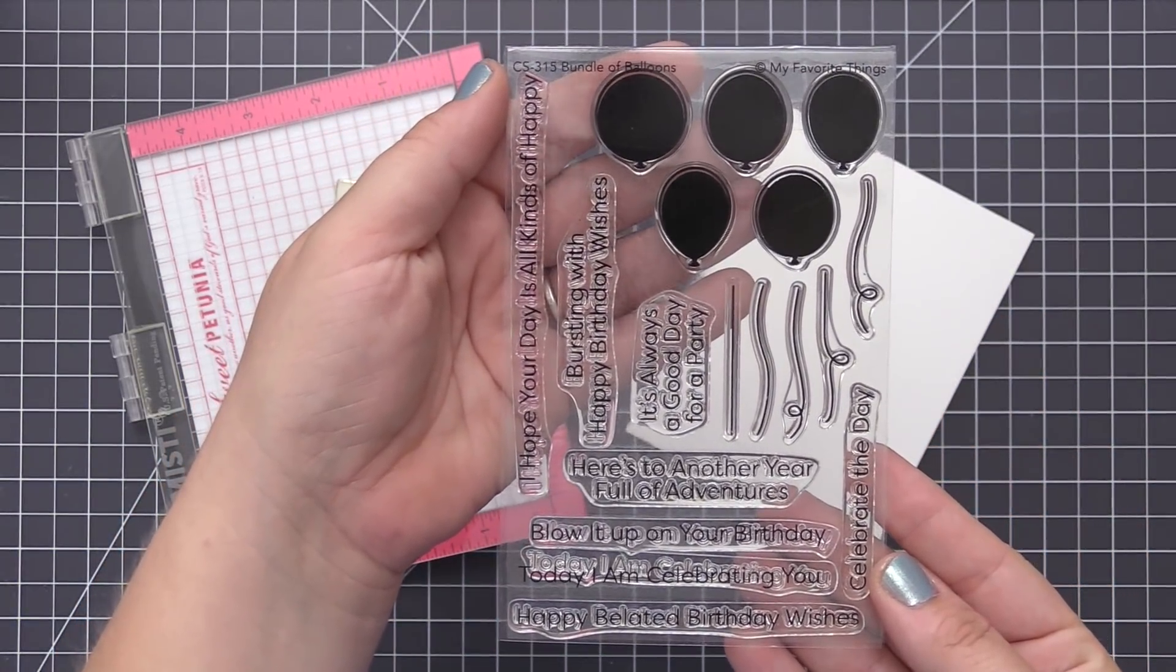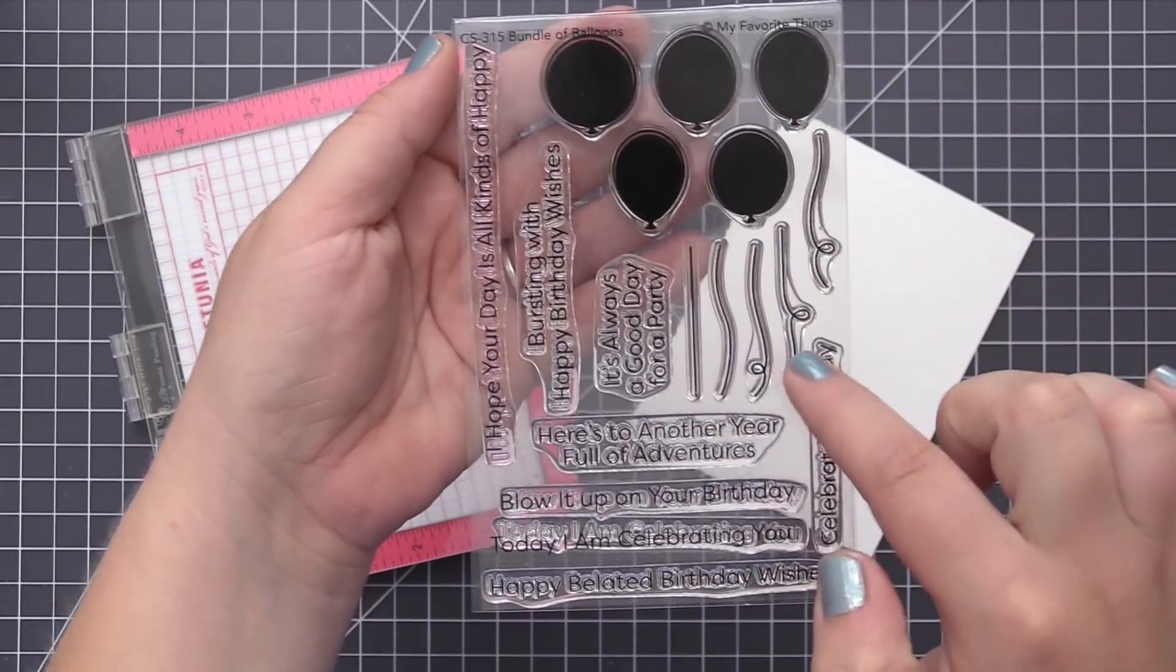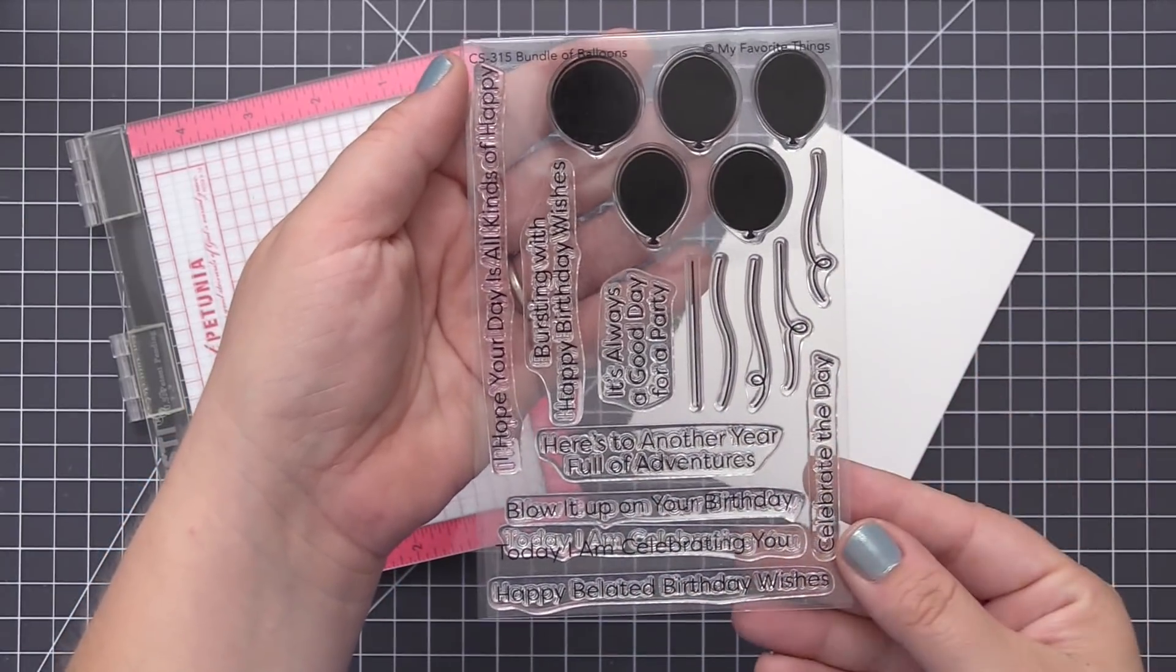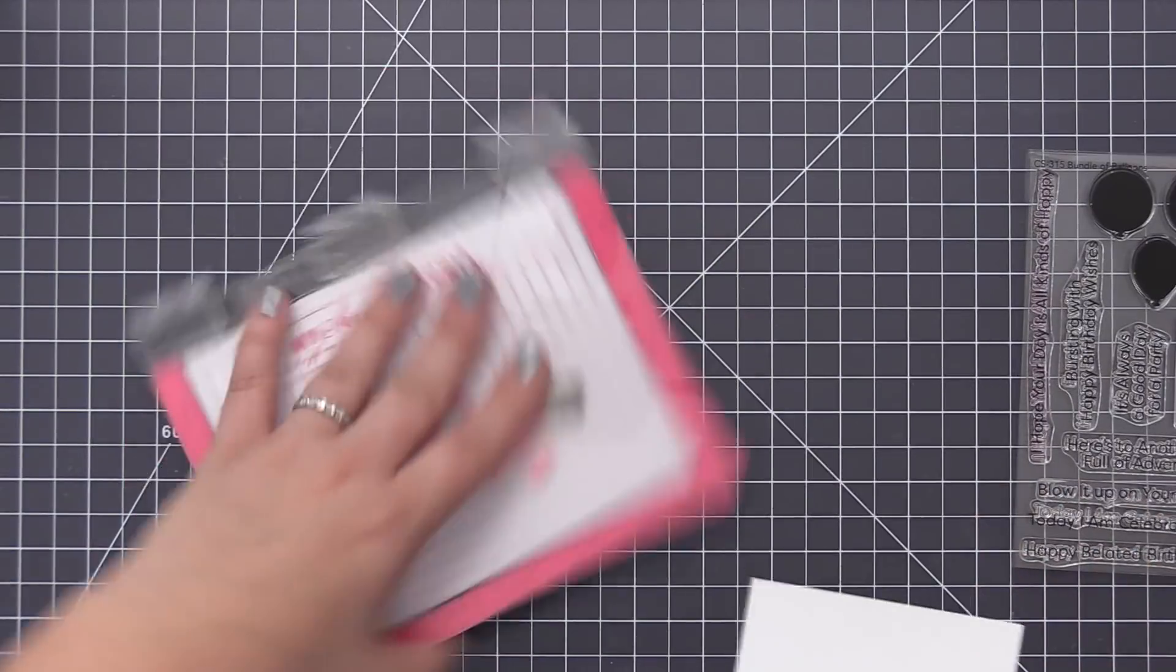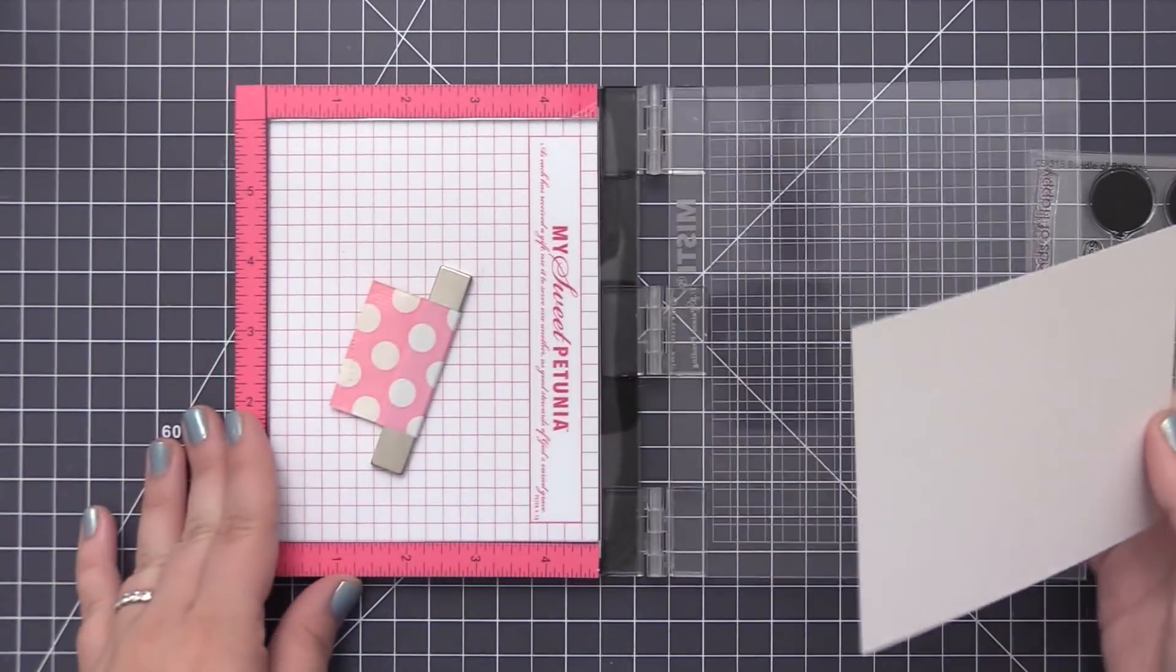We're going to do some solid stamping with our balloons here and then add a sentiment as well. This is going to be pretty much a one-layer card and I want to create a rainbow design of birthday balloons.